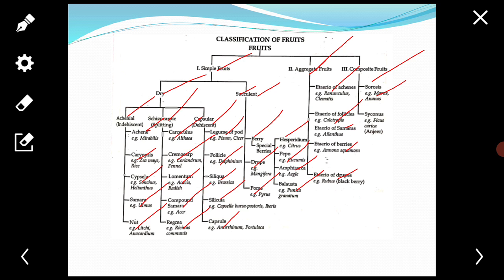One is sorosis. The second is the syconus. Sorosis: it develops from a spike in pineapple, from female catkin in mulberry, from spadix in Monstera.